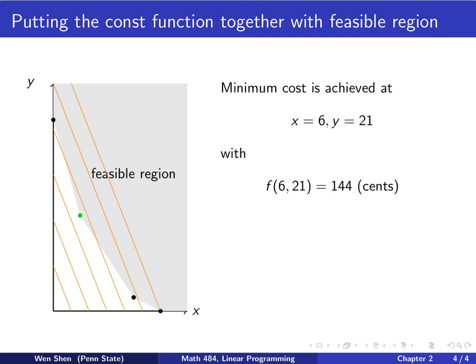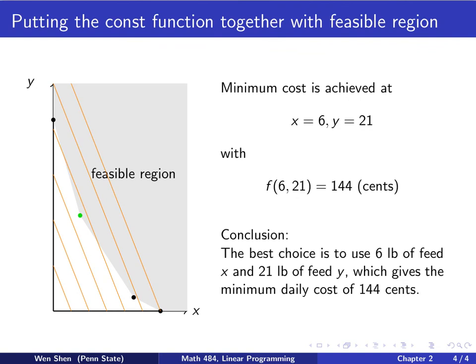Now we can conclude that the minimum cost is achieved at the point. Recall the coordinate is x is 6, y is 21. We can plug these two values into the cost function and compute it, and that will give us 144 cents. So this will be the minimum cost and it's achieved at that green point. So translate this back into the original word problem. The best choice for the farmer is to use 6 pounds of feed X and 21 pounds of feed Y which gives the minimum daily cost of 144 cents.